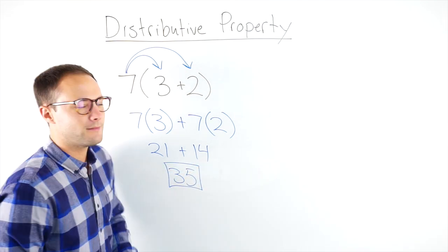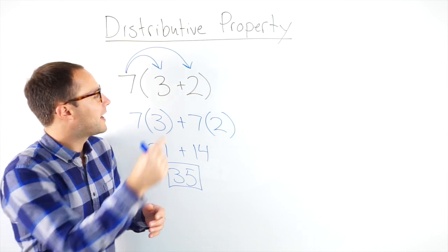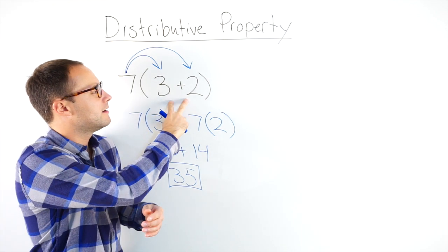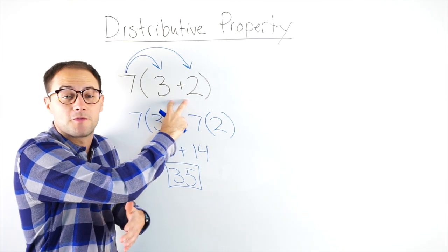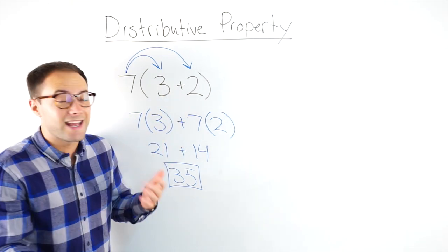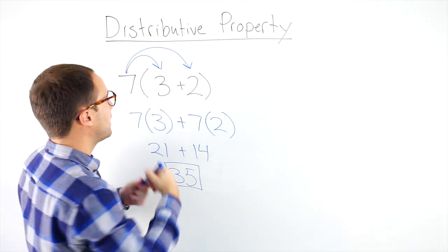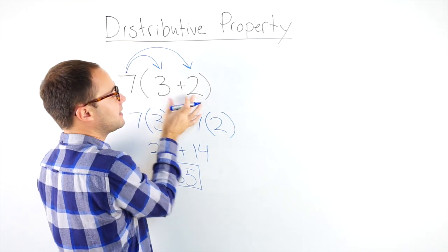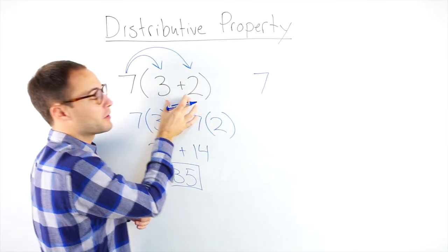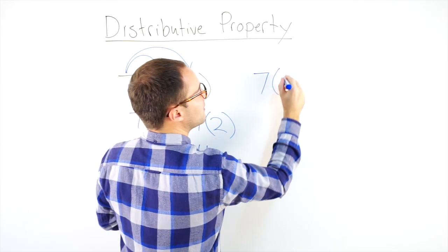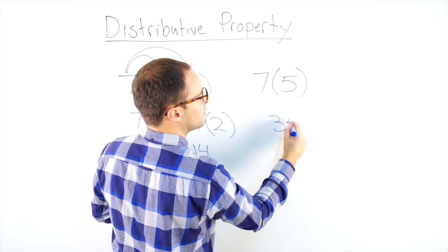Now, you might be saying, well Jeff, I thought if we're doing order of operations, doesn't parentheses come first? And yeah, they do — you can do the same thing. If I did parentheses first, I would get 3 plus 2 is 5, and 7 times 5 is 35. It's the same thing.